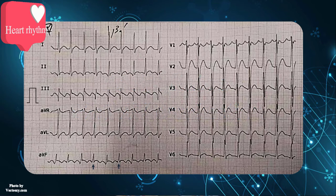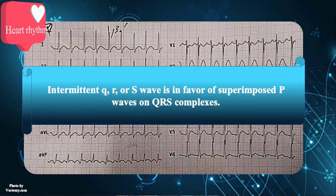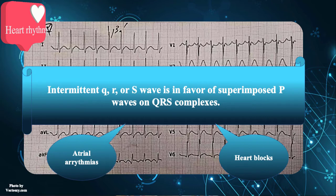The underlying rhythm is undoubtedly atrial flutter with 2-to-1 conduction. Note that some flutter waves are buried within QRS complexes and therefore are not visible. On the other hand, certain flutter waves are immediately before QRS complexes, forming intermittent pseudo-Q waves. As a general rule, intermittent Q, R, or S waves are in favor of superimposed P waves on QRS complexes and are usually observed in heart blocks or atrial arrhythmias, especially atrial tachycardia or atrial flutter.